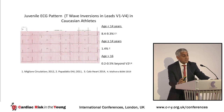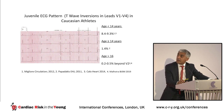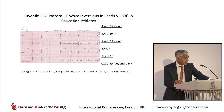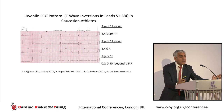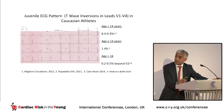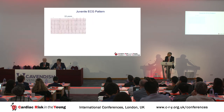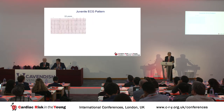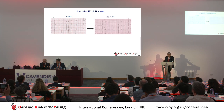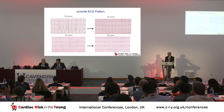Children often have anterior T wave inversion, and its prevalence declines steeply after the age of 16. A juvenile ECG pattern may be allowed in an asymptomatic young child without a family history until age 16. If T wave inversion persists beyond V2 in someone aged over 16, investigation is needed. At CRY, when someone under 16 presents with T wave inversion, the ECG is repeated and often normalizes by age 16.